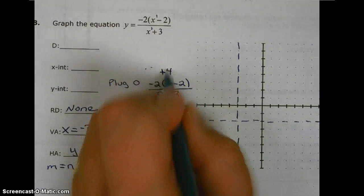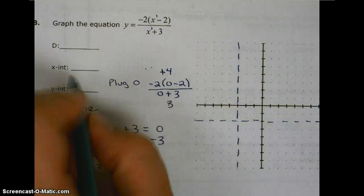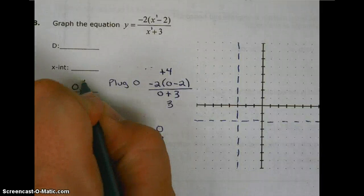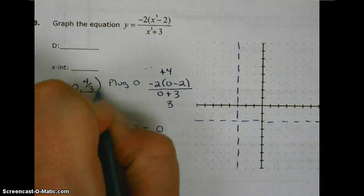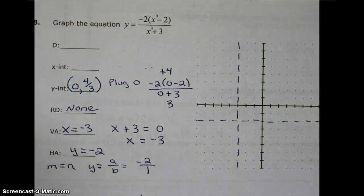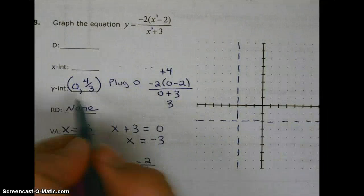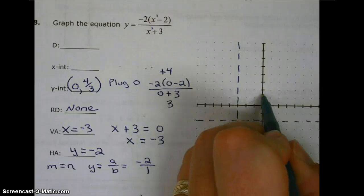So we're going to have 4 over 3. So our y-intercept is going to be at 0, 4 thirds. So we could put that point on right now. 0, 4 thirds, about right here.